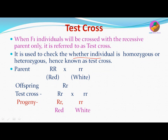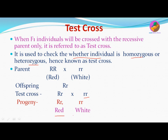Test cross is used to check whether an individual is homozygous or heterozygous, hence it is known as test cross. Here we have taken a red flowered plant and a white flowered plant as parents. The offspring will be capital R small r — heterozygous red — because redness is dominant. When the offspring is crossed with the recessive parent only, it gives rise to two types: capital R small r (red) and small r small r (white). This cross is very important to determine whether an individual is homozygous or heterozygous.